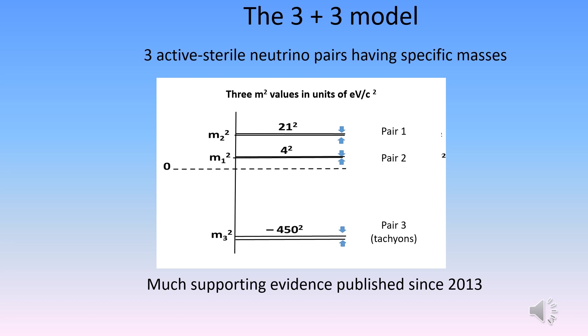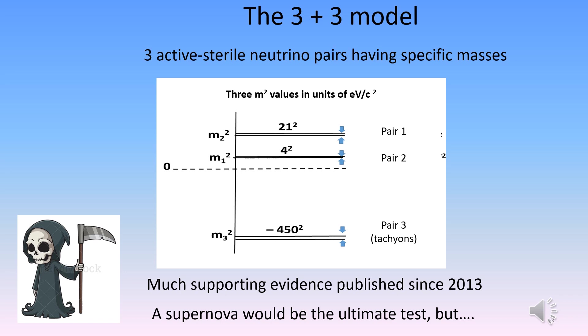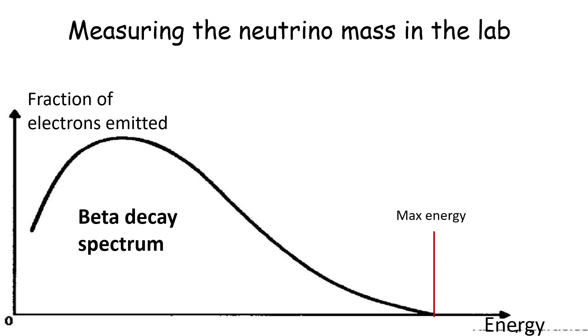A new supernova in our galaxy would certainly be the ultimate test of the model, given the far greater sensitivity of today's neutrino detectors compared to those of 1987. While supernovas don't occur in a regular schedule, if the next one in our galaxy happened 50 years after the last one, I would then be age 121, five years older than the oldest man who ever lived. I've therefore been more interested in lab experiments that might test the model during my limited remaining time on this planet.